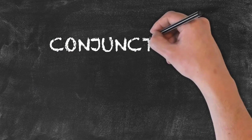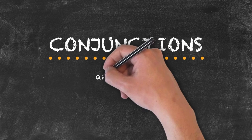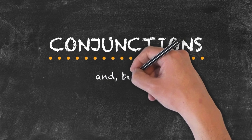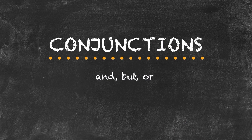Finally, let's take a look at our conjunctions. Conjunctions are linking or joining words. For example: 'and', 'but', and 'or'.